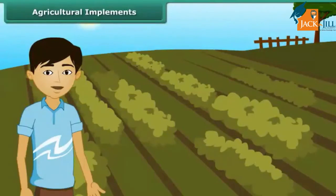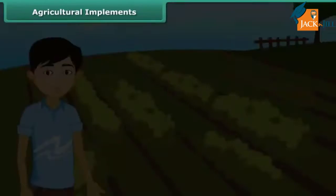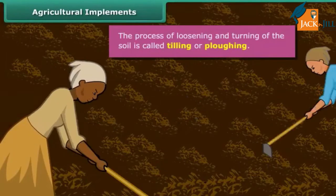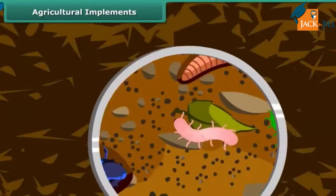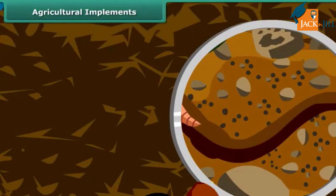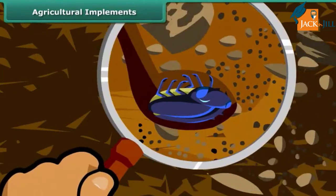How do farmers grow crops in a large field? First of all, they prepare the soil by turning and loosening it. The loosened soil helps in the growth of earthworms and microbes present in the soil. These organisms are also known as farmer's friends. They add humus to the soil. Turning and loosening of soil brings the nutrient-rich soil to the top, and these nutrients are then used by the plants.